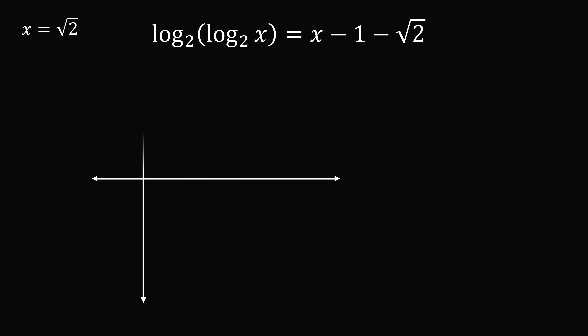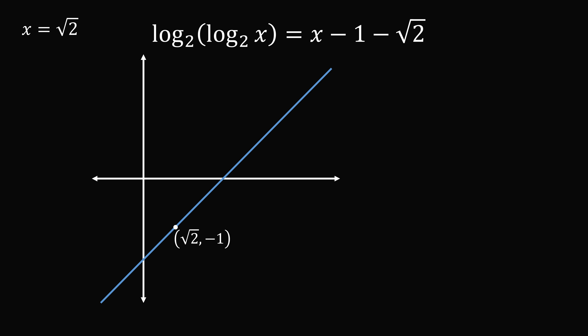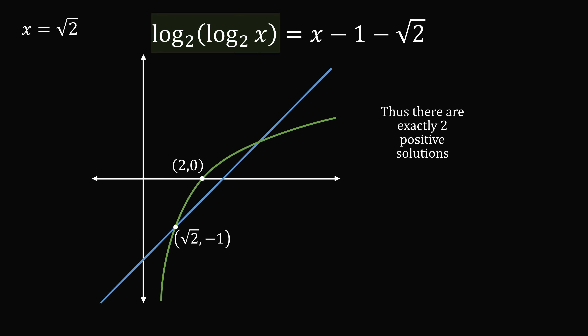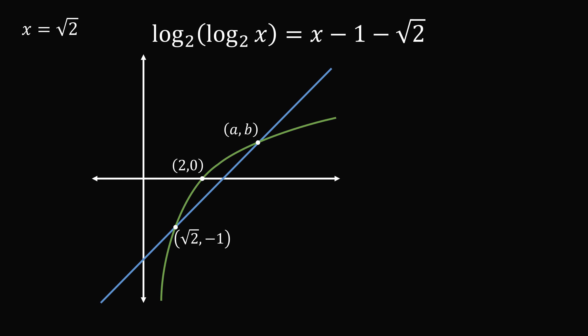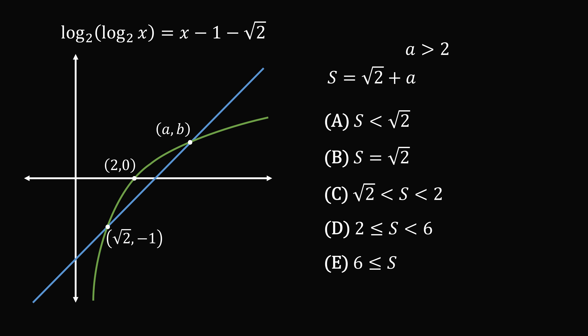Let's sketch a graph of the two curves together. We have the line going through the point (square root of 2, negative 1). We also have the point (2, 0), and since 2 is greater than square root of 2, we draw the logarithmic-type curve through these two points. At some point, the curve will grow slower than the linear curve, so they will intersect one more time — call it (a, b). We can see that a is to the right of (2, 0), so the sum of the roots is square root of 2 plus a, where a is greater than 2. This lets us immediately eliminate answer choices a, b, and c, leaving us with choices d and e.